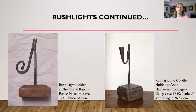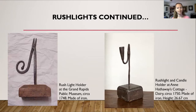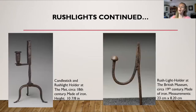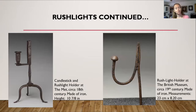And more rush light holders. The rush light holder on the left is from the Grand Rapids Public Museum, from about 1748, made of iron — again, a wooden base and a pair of pliers sticking out. On the right is another rush light and candle holder combination from Anne Hathaway's Cottage, from about 1750, also made of iron. The one on the left is a candlestick and rush light holder at the Met, from about the 18th century, made of iron. The rush light holder on the right is from the British Museum, from about the 19th century, also made of iron.